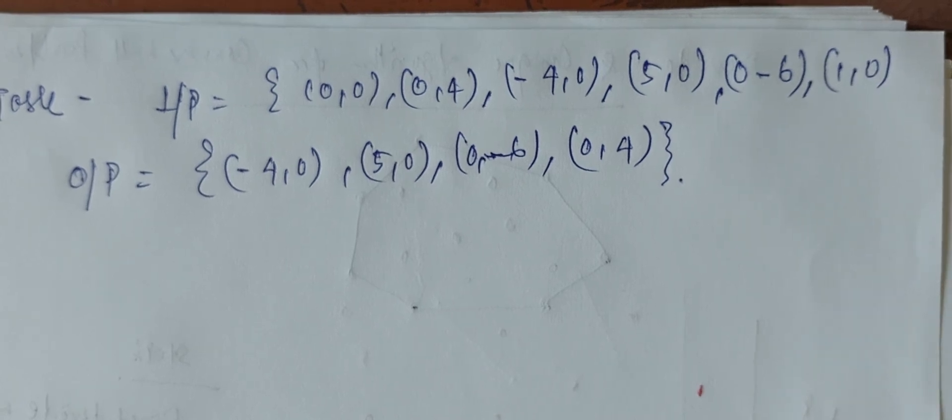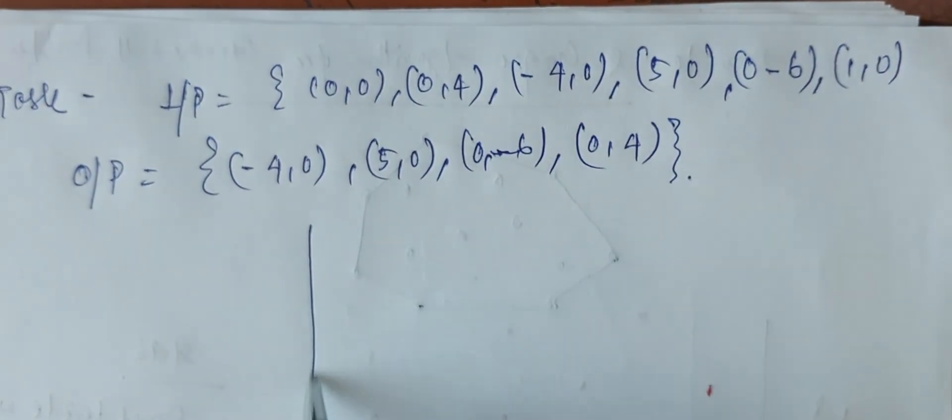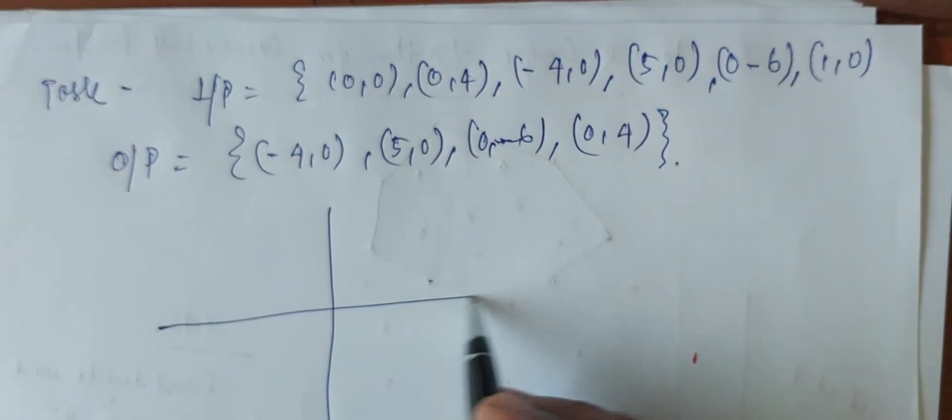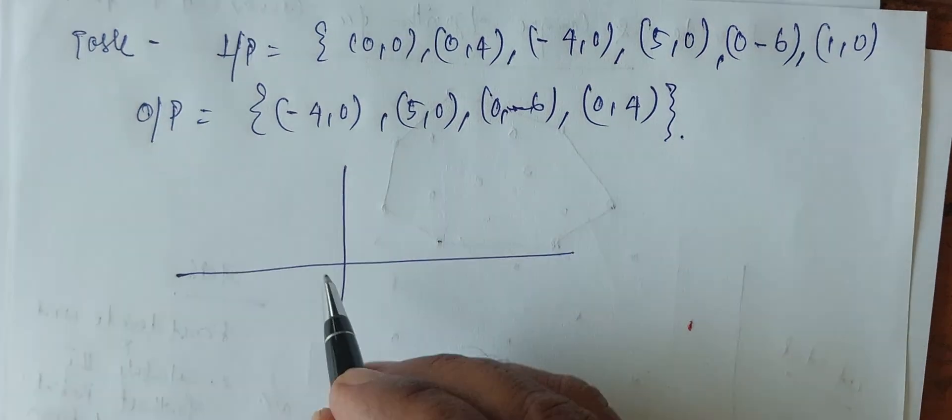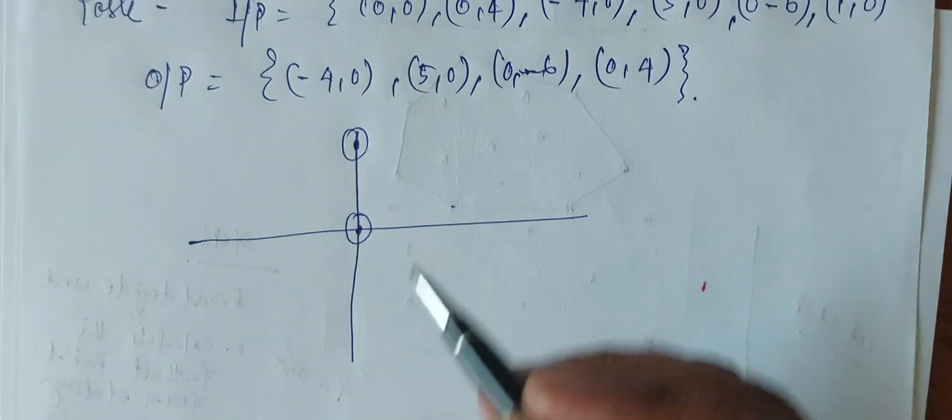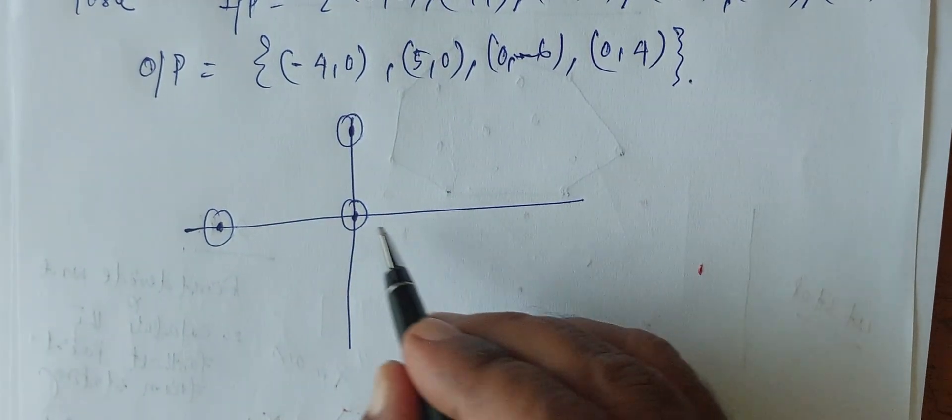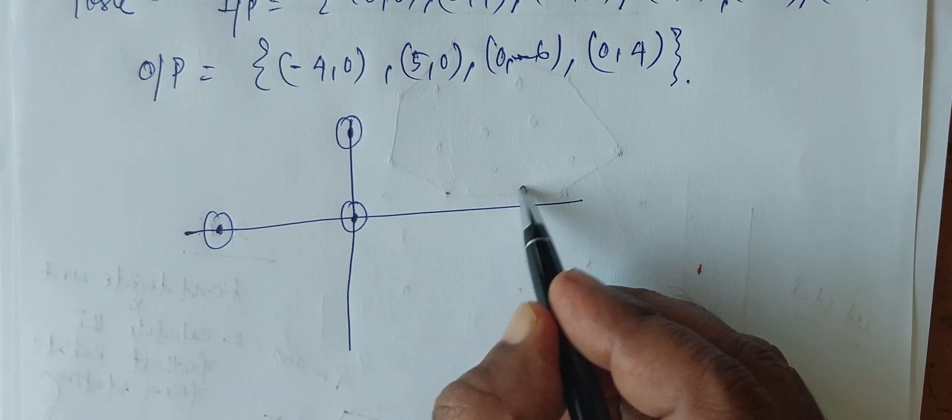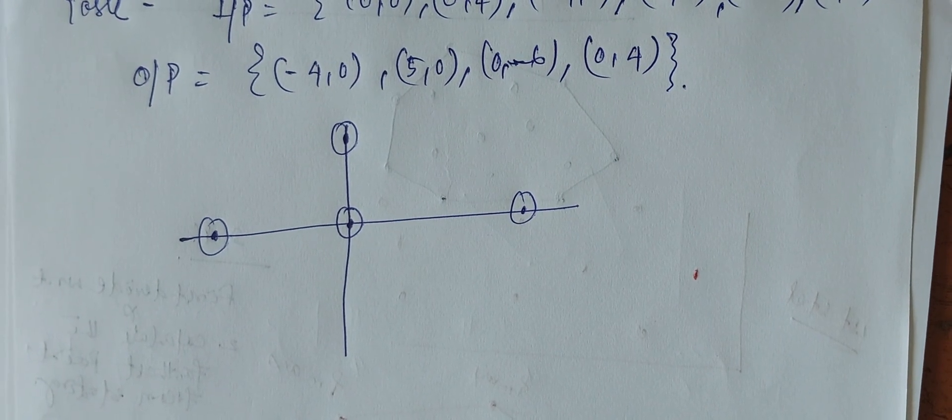You will definitely get the knowledge more briefly. You just draw a minus and plus both side axis. Suppose (0,0), this will be (0,0). (0,4), this may be (0,4). (-4,0), this may be (-4,0). (5,0), this may be (5,0). Similarly you do and try by yourself. Thank you.